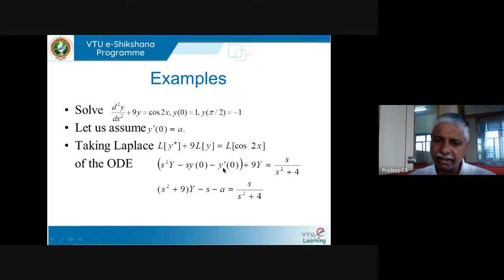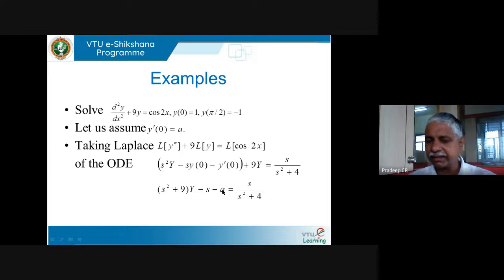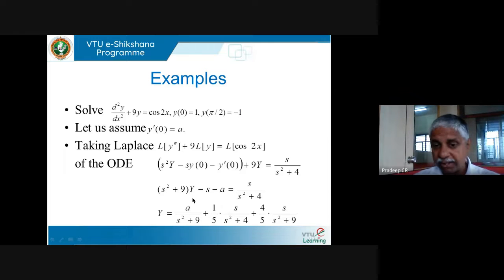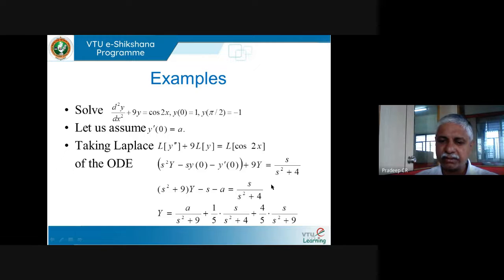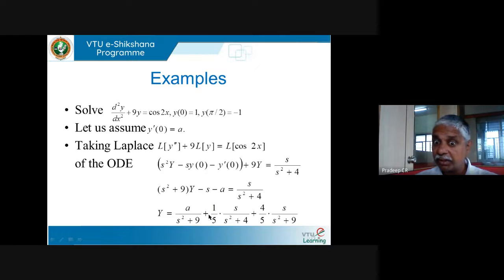If y'(0) is not given directly, assume it equals some value a, proceed with the solution to get y in terms of a, then use the second boundary condition to evaluate a. This handles boundary value problems where values are given at two distinct points rather than initial conditions.